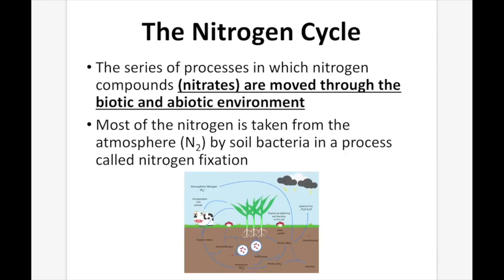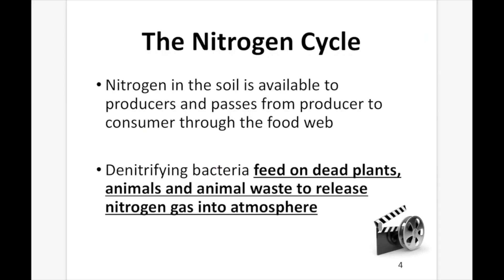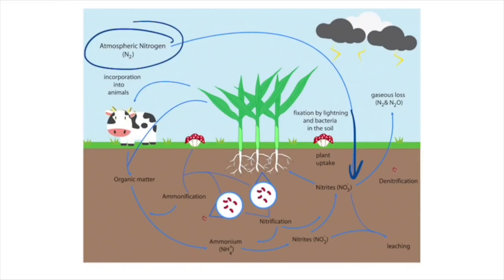The third cycle is the nitrogen cycle — a series of processes in which nitrogen compounds (nitrates) are moved through the biotic and abiotic environment. Most nitrogen is taken from the atmosphere as N2 by soil bacteria in a process called nitrogen fixation. Nitrogen in the soil is then available to producers and passes from producer to consumer through the food web. Plants take up nitrogen, consumers eat the plants, and when they die, bacteria returns the organic matter's nitrogen back into the soil, where it can be taken up by plants again.